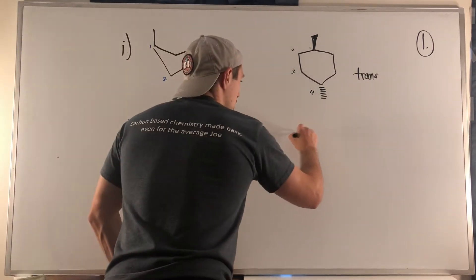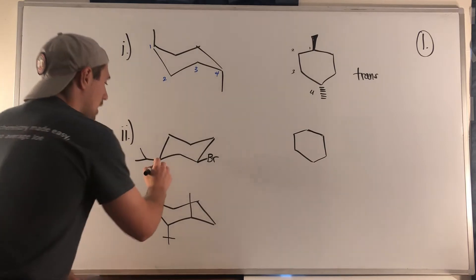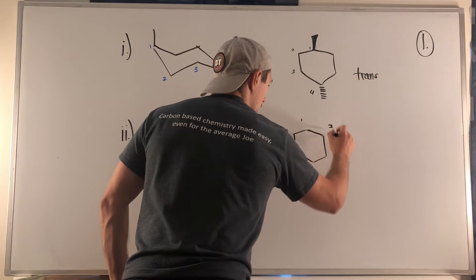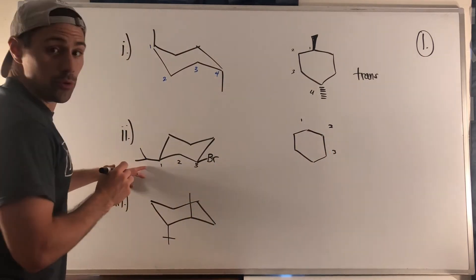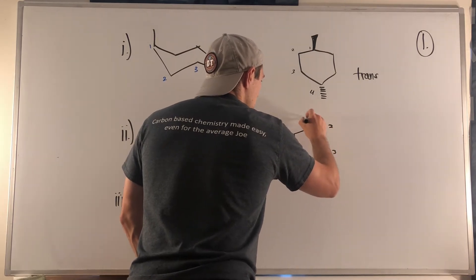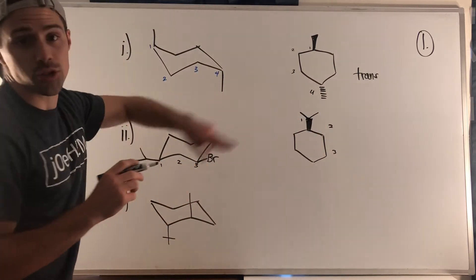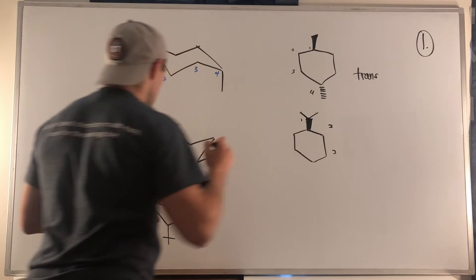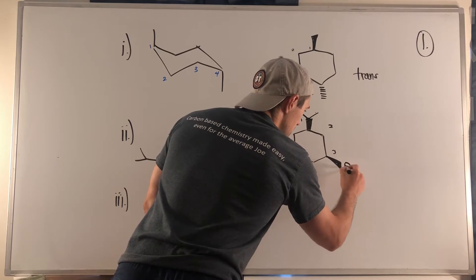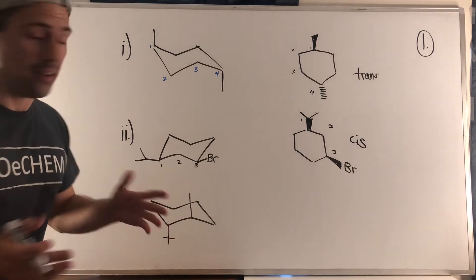Moving on to sub-problem two. We have the cyclohexane ring as always. Both of these groups are up and they have a one-three relationship. The isopropyl group is up, so I use a wedge — don't be thrown off, there is a carbon where the wedge meets the straight line. One, two, three carbons. And on position three we also have a wedge because they're on the same side of the ring. These two groups are cis to one another — same side.